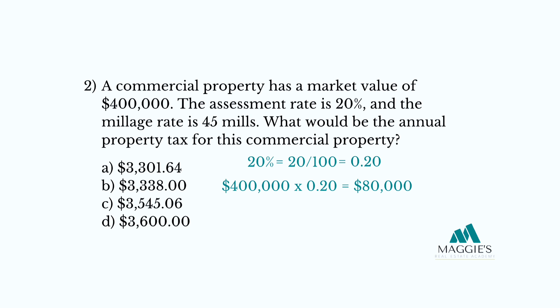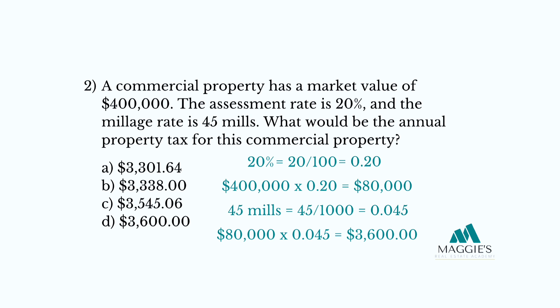Step 3: convert the millage rate into a decimal. We have 45 mills divided by 1,000, which equals 0.045. Step 4: multiply the assessed amount by the millage rate. $80,000 times 0.045 equals $3,600. So the final answer to this question is $3,600.